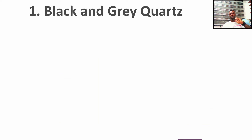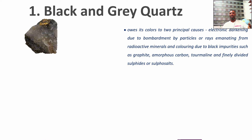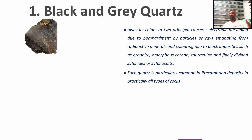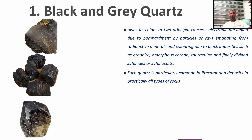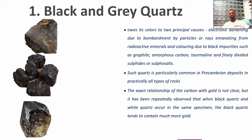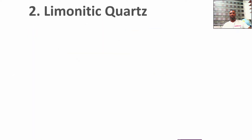The first variety we are looking at is black and gray quartz. These colors are the result of impurities — most have been traced back to carbon or graphite. Such quartz is particularly common in Precambrian deposits. In terms of the relationship between carbon and gold, it's not entirely clear, but it has been observed that when black quartz and white quartz occur together, the black one tends to contain more gold.